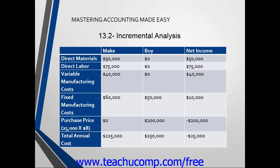Another useful example is looking at whether a company should make or buy specific components as part of a product. For this example, let's assume that company XYZ Inc. has a total cost per unit of $9 for this specific piece of the product. Next, the manager would take direct materials, direct labor, and other manufacturing costs into account to determine the best course of action.